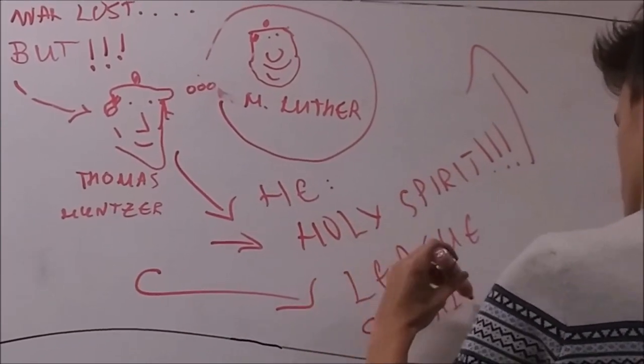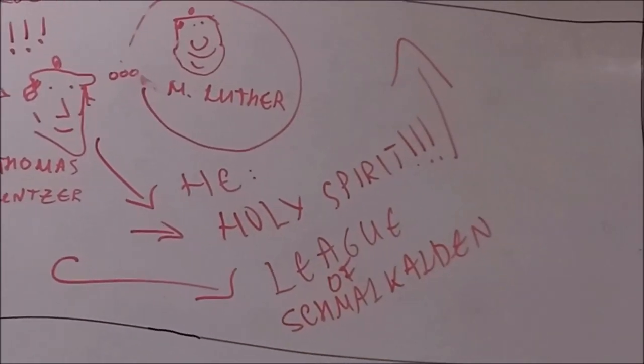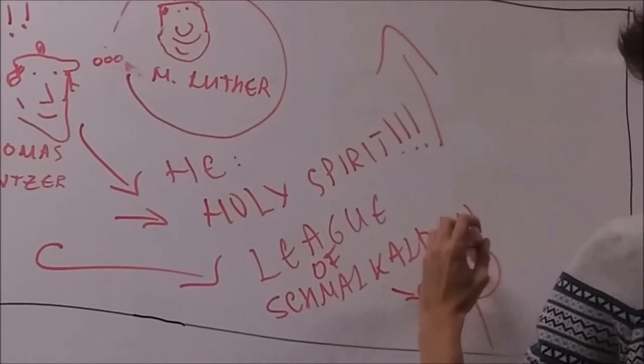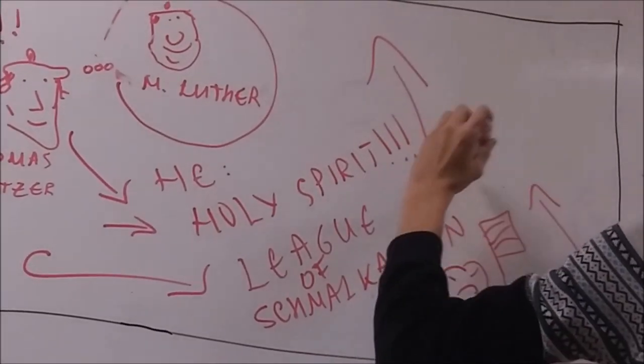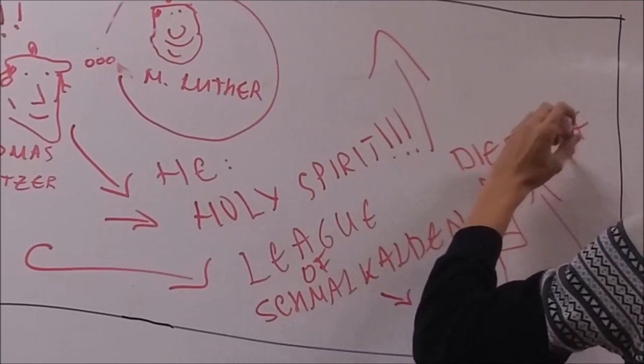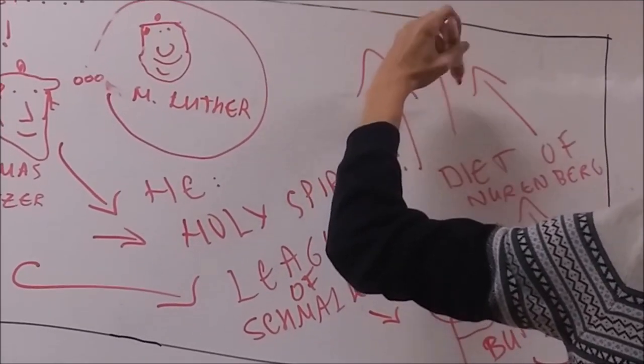The League of Schmalkaden was formed on Protestant territories with the idea to defend themselves collectively. Not long after, the Emperor was forced to sign the Treaty of Nuremberg in 1532, which granted religious freedom at least for now.